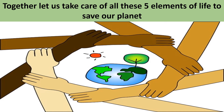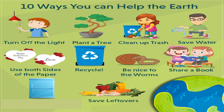There are different ways in which we can help the earth. You can turn off the lights whenever they're not required. Plant a tree. Clean up the trash. Save water. Whenever you write, see to it that you write on both sides of the paper. Recycle. Be nice to insects, worms, and animals. Share books with your friends. Save leftover food and see what you can do to reuse it. There are many more ways in which you can save our planet earth and our environment.